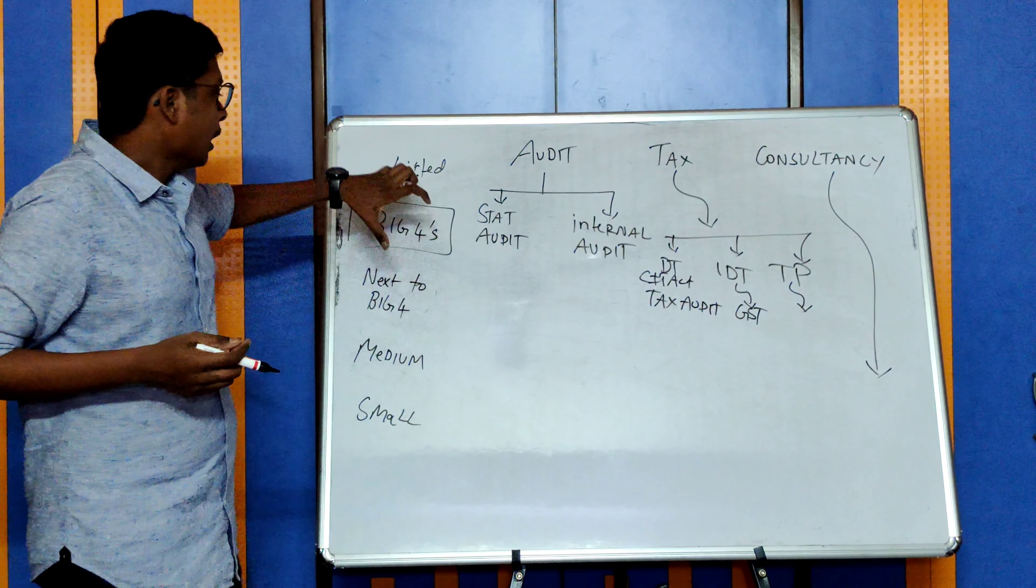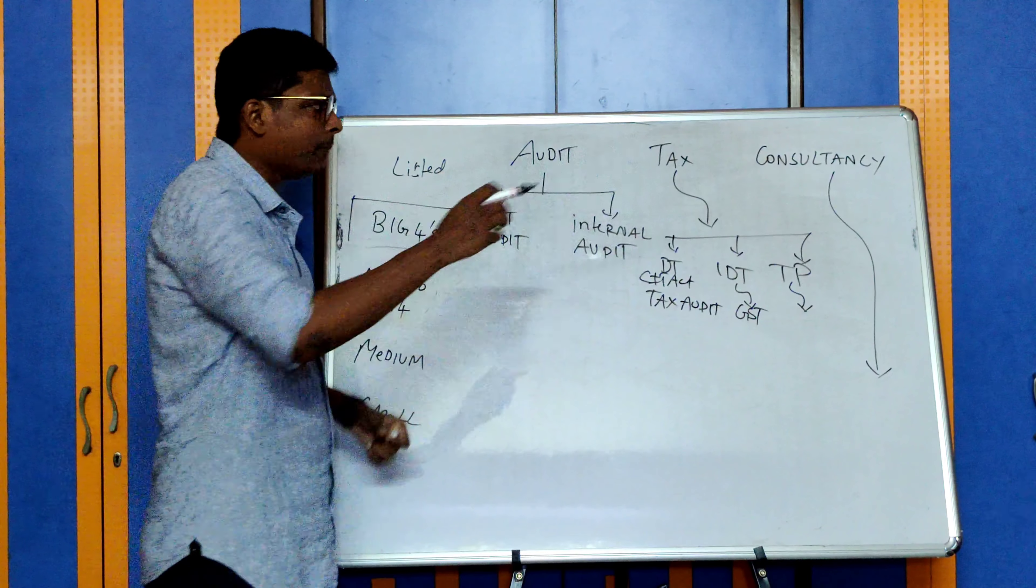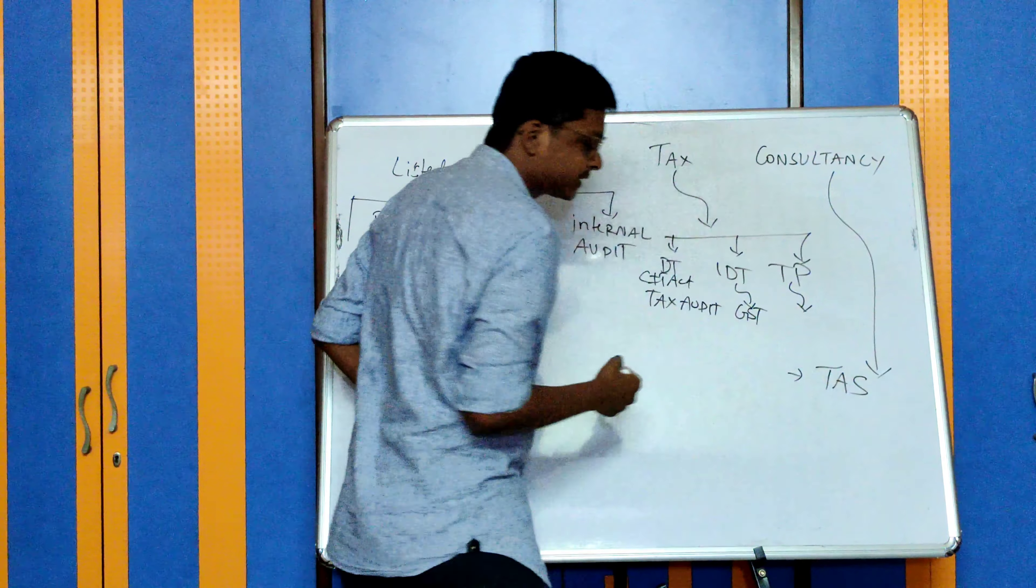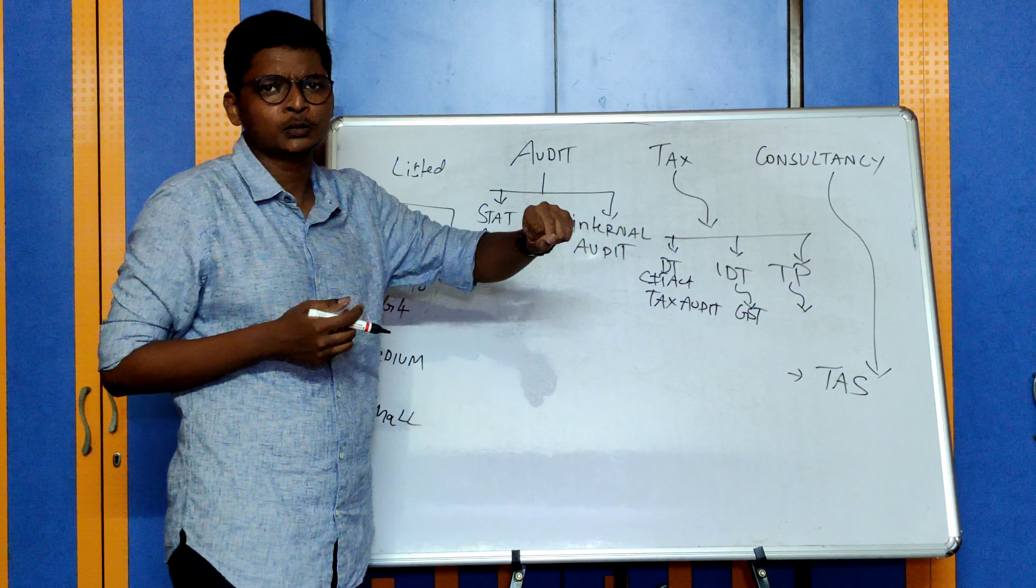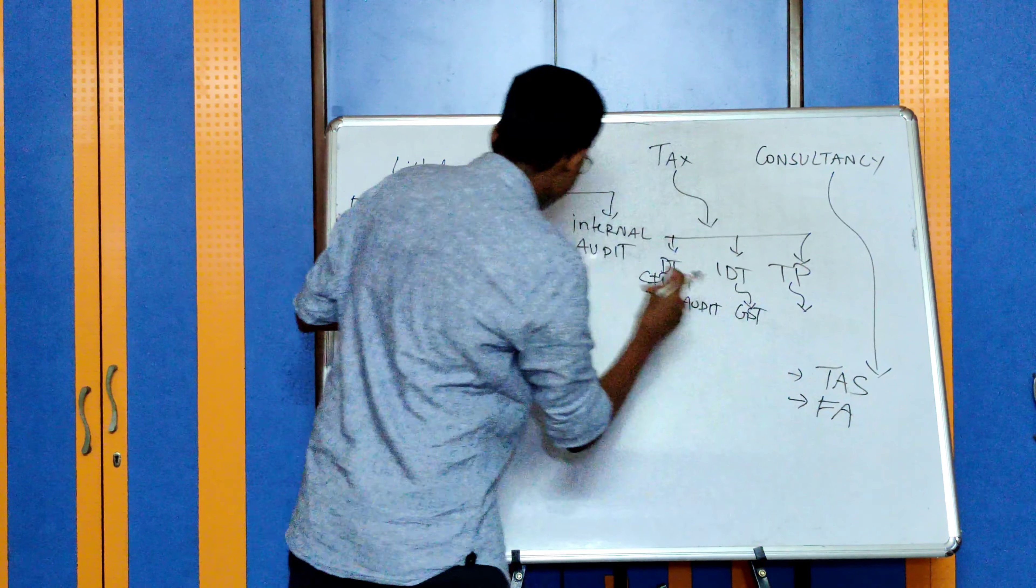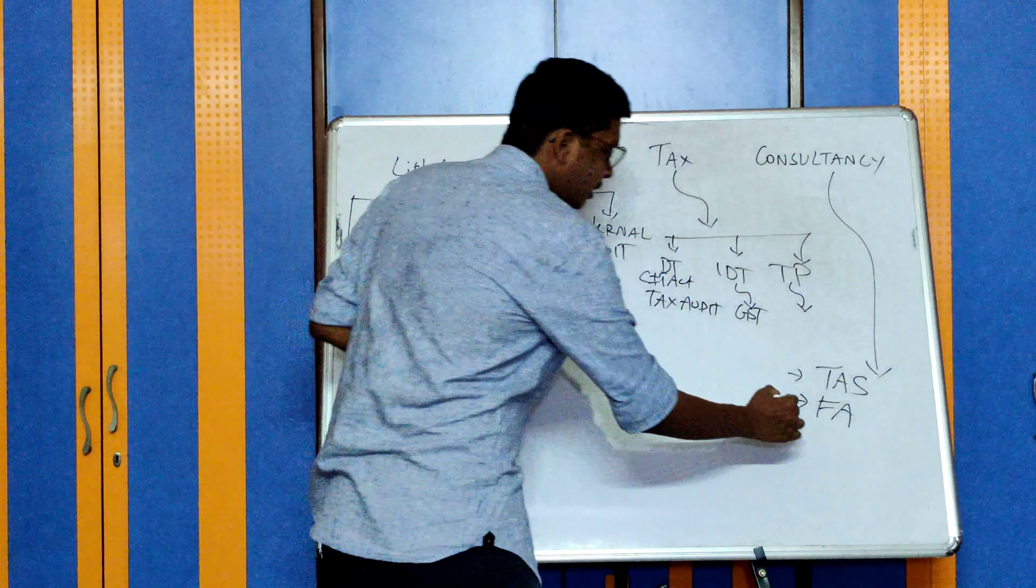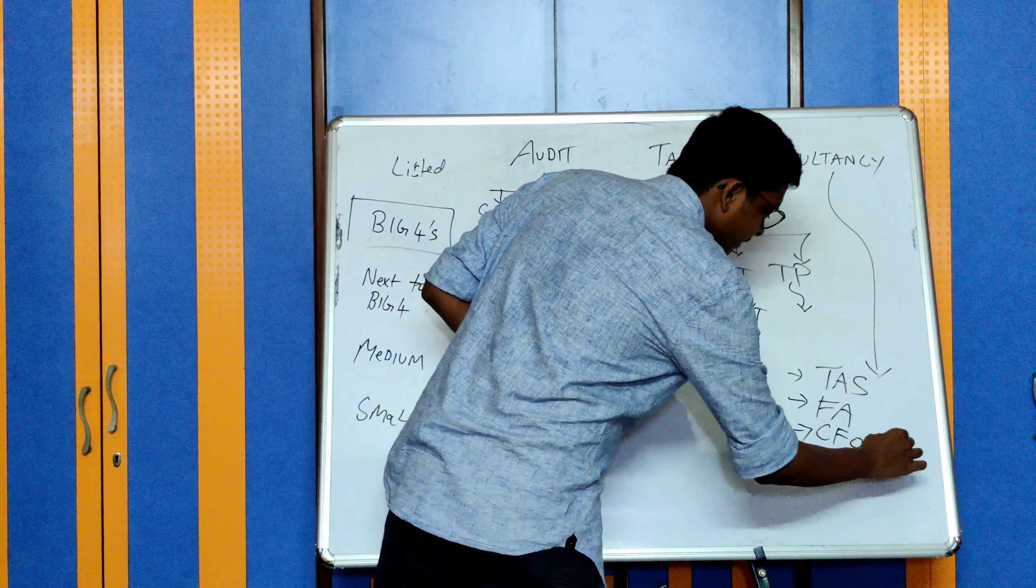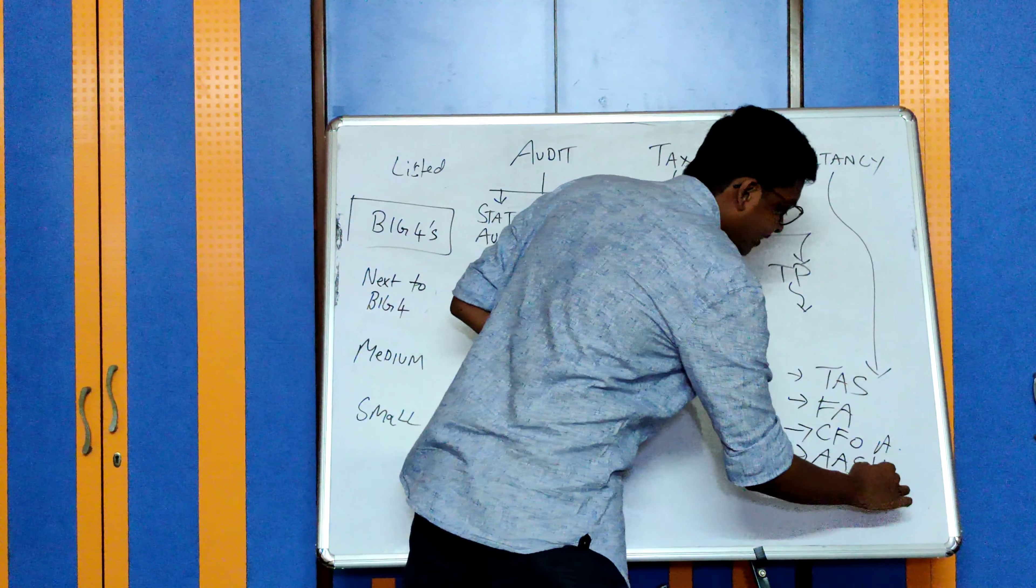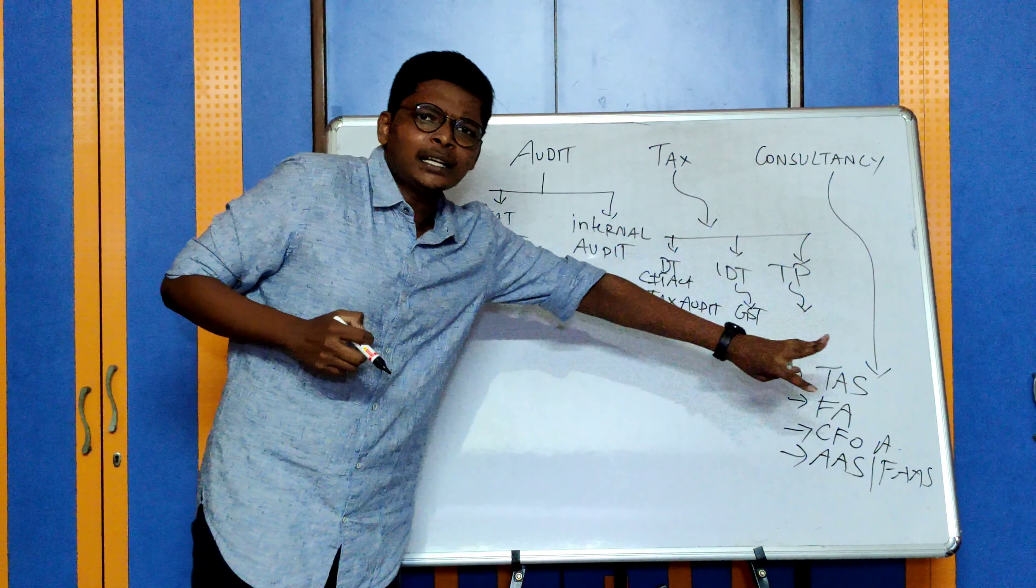Coming to consultancy, Big Four do work other than auditing and tax. For example, transaction advisory services - they have a department which deals in mergers and acquisitions, due diligence, valuations. Forensic audit is a new upcoming field. Next you have CFO advisory in some Big Four, then accounting advisory services, also called FAS, where Ind AS related advisory is done. There are many other departments where people work.